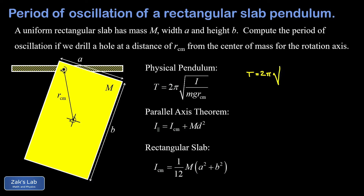Now we're assembling all these pieces to answer how fast a rectangular slab oscillates as a physical pendulum. I need to write down the total moment of inertia with respect to the actual rotation axis drilled near the corner. By the parallel axis theorem, that's I_cm plus the adjustment term for the parallel axis being a distance d away from the center of mass: (1/12)·m·(a² + b²) plus m·r_cm².